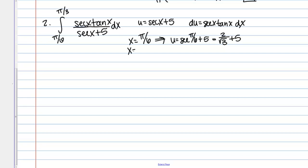And then same thing for pi over 3, we want to transform that to a u value, so u equals secant pi over 3 plus 5. So cosine of pi over 3 is 1 half, and the reciprocal of 1 half is 2, so this then is 2 plus 5 which is 7.